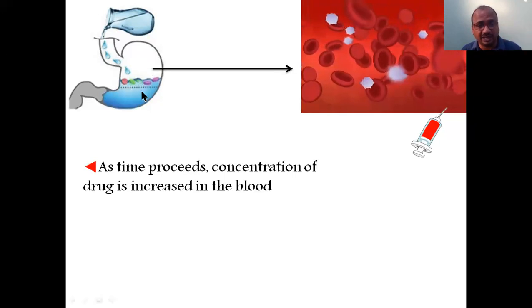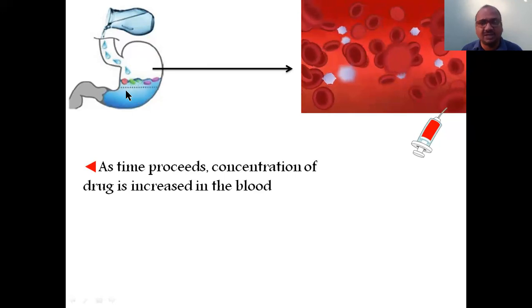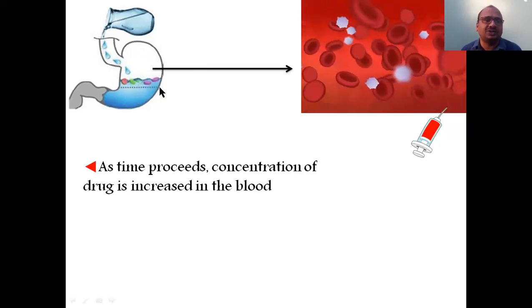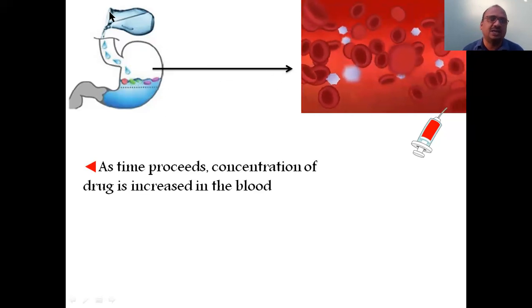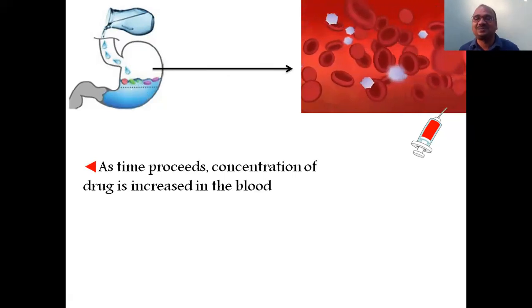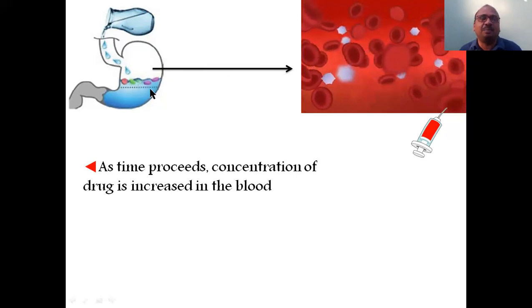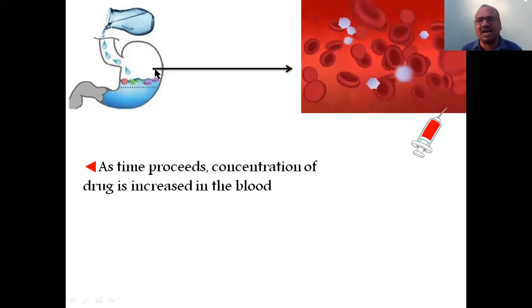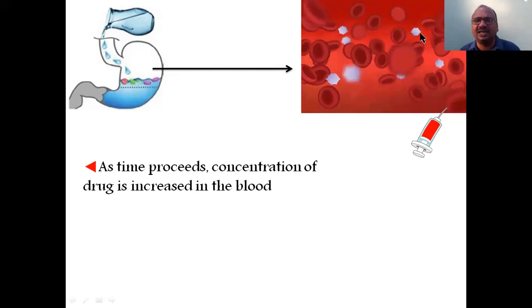Inside the stomach there is no blood — only whatever you consume along with water will be there. But the entire wall surrounding the stomach consists of blood vessels. So disintegration and dissolution occur in the stomach water, and then the drug becomes completely dissolved and starts absorption either from the stomach or intestine — from the gastrointestinal tract.